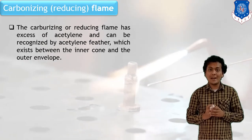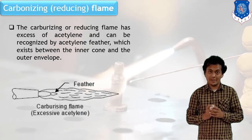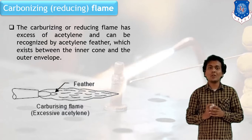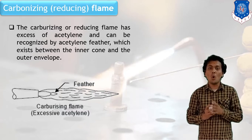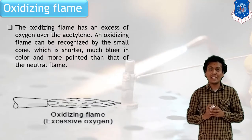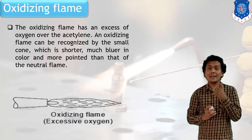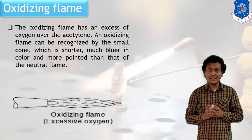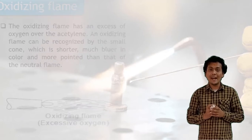The second type is the carbonizing or reducing flame. When the acetylene gas flow rate is higher than oxygen, this type of flame will be generated. Generally, this flame is not used in welding of most metals — neutral or oxidizing flames are preferable. The third type is the oxidizing flame. When the volume flow rate of oxygen is higher than acetylene, this type of flame is generated. Heat generated is higher because oxygen is in excess content.